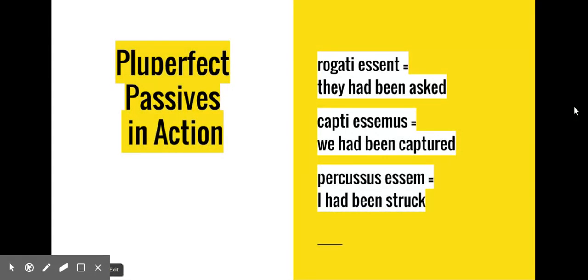With pluperfect passive verbs, we see them looking like this. Again, we see that quintessential pluperfect use of the English word had. It's passive in form because the subject is having the action done to it. And here we're starting out with a fourth principal part, and then we're pairing it with this subjunctive form of erant.